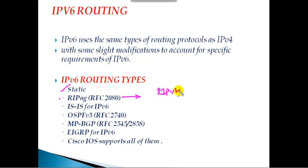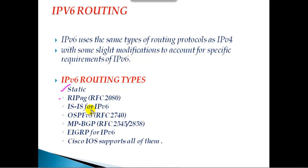We also have RIPng — in IPv4 we had RIP version 2, here it's called RIPng (next generation RIP). The metric and features remain the same — maximum hop count is 15 and the metric is calculated based on hop counts. IS-IS also supports IPv6. For OSPF, the protocol used in IPv4 is OSPFv2, while here we call it OSPFv3.